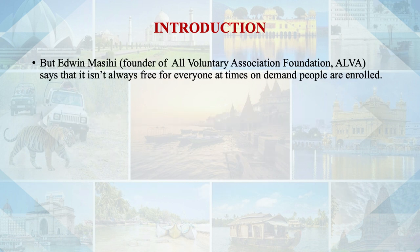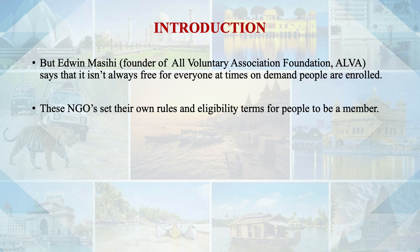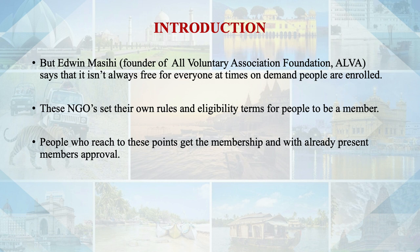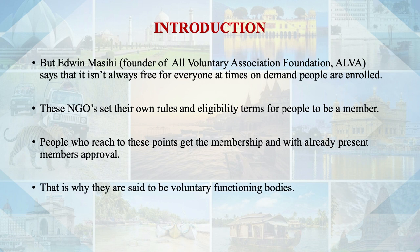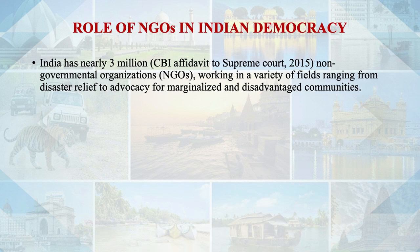Scholar Maishi says that it is not always free for everyone; at times on demand people are enrolled. These NGOs set down their own rules and eligibility for people to become members. People who meet these points get membership with already present members' approval. That is why they are said to be a voluntary functioning body. Now let's see the role of NGOs in Indian democracy. India has nearly 3 million non-governmental organizations.